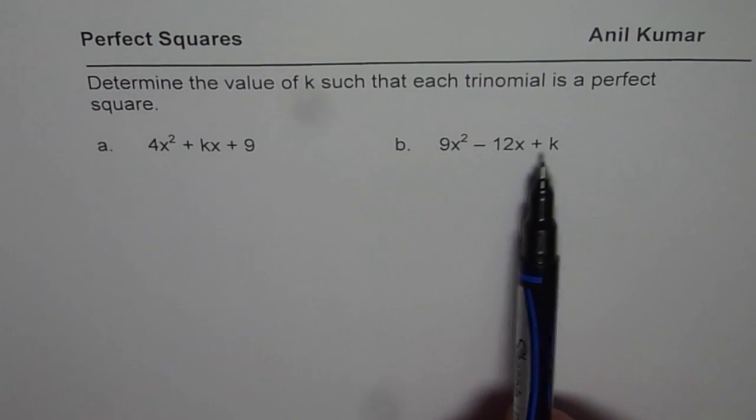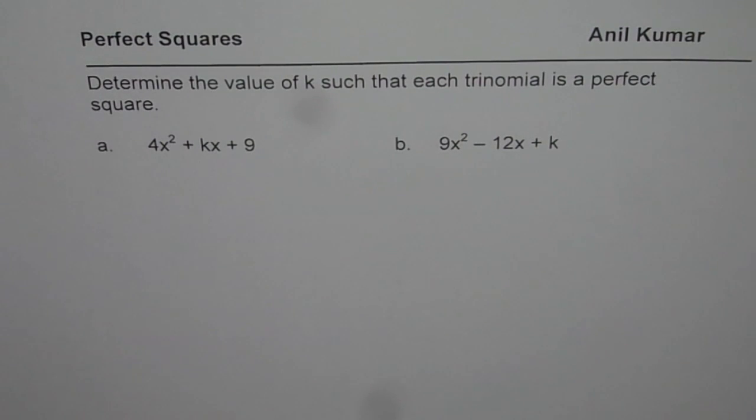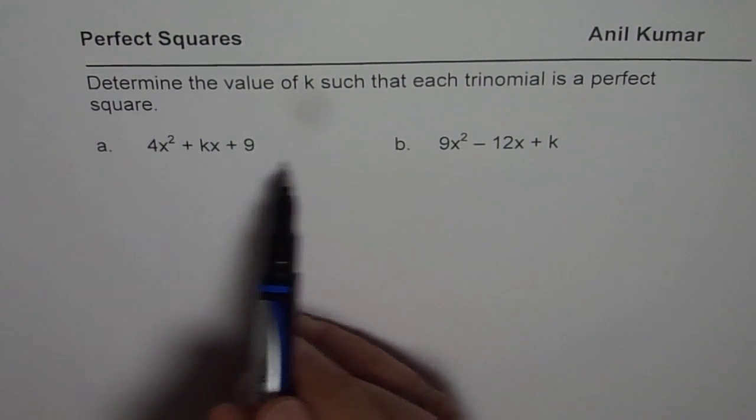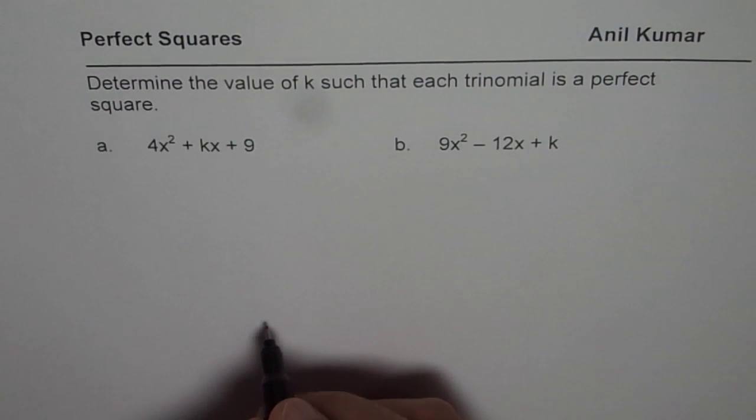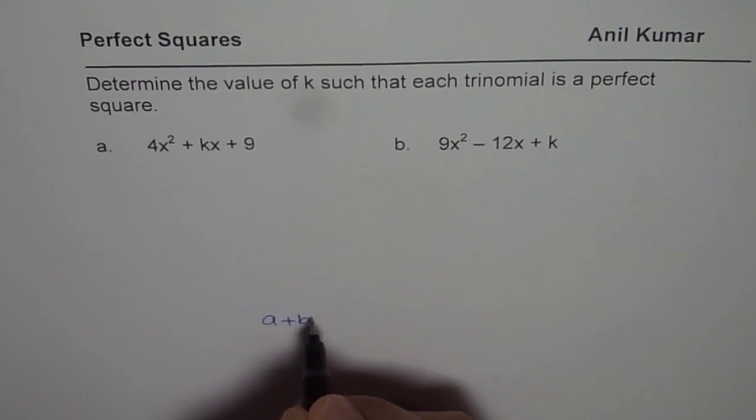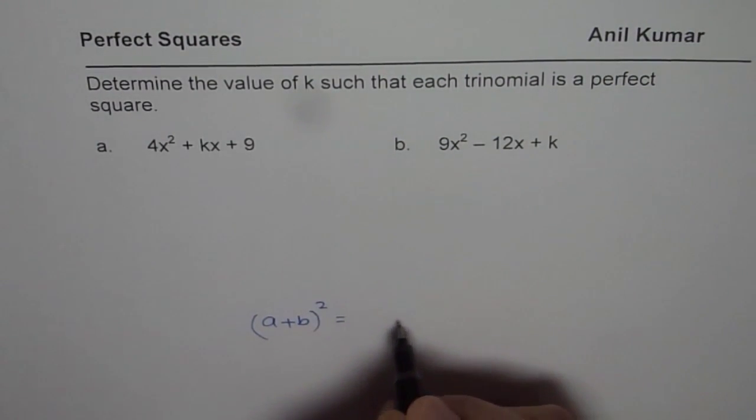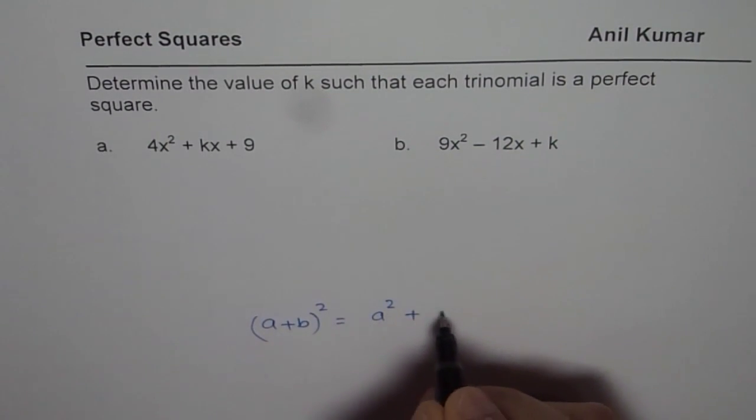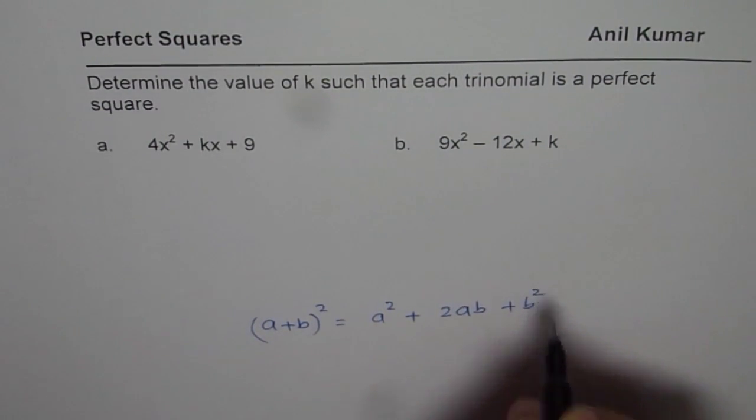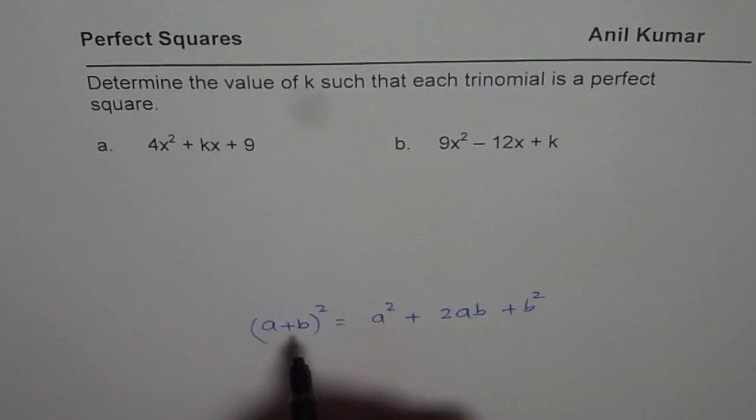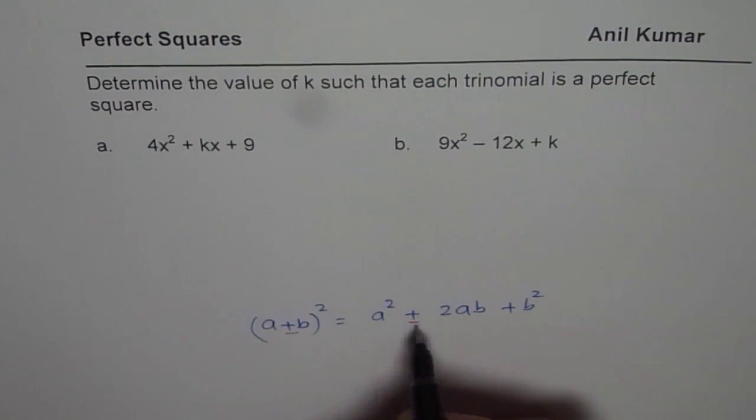What values of k will make this trinomial a perfect square? So when we are saying perfect square, it means what? It means that (a + b)² can be written as a² + 2ab + b². In case we have a minus b, then this term is negative.